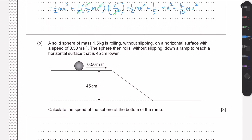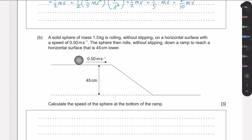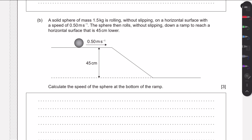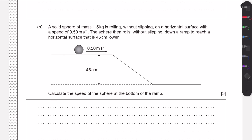We're now told a solid sphere of mass 1.5 kg is rolling without slipping on a horizontal surface and then rolls down a ramp to a surface 45 centimeters lower. We need to calculate the speed at the bottom. As with every energy conservation question, we identify the initial and final situations and note what types of energy are present in each case — the total energy must be conserved.